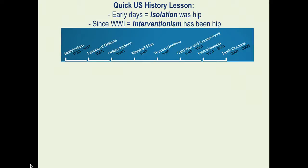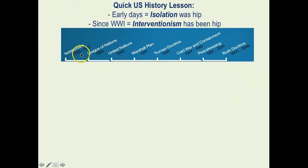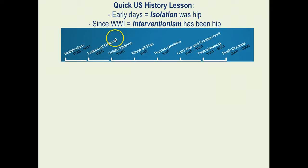Let's start with a quick history lesson. In the early days of our country, as you've read in George Washington's farewell address, the United States promoted isolationism — staying out of foreign affairs. This timeline shows we did this roughly from 1783 to 1917. We did fight Mexico in the 1840s and were involved in the Spanish-American War in the late 1890s.